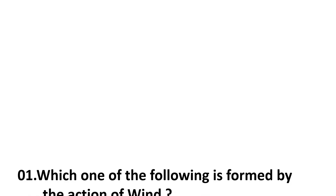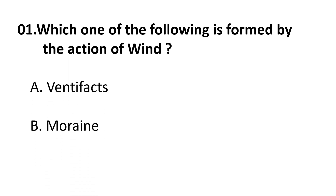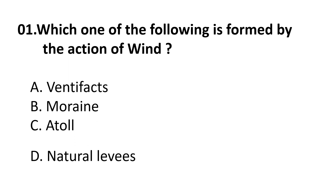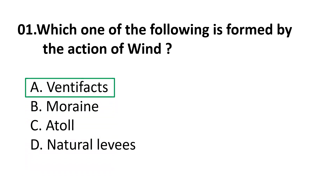Question 1: Which one of the following is formed by the action of wind? Choices are: A) Ventifact, B) Moraine, C) Atoll, D) Natural levee. The correct answer is A) Ventifact. Moraine is formed due to glaciers, atolls are formed due to oceans, and natural levees are formed due to rivers.